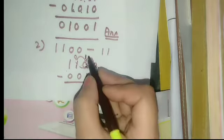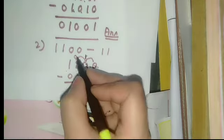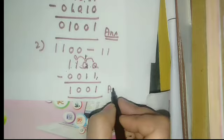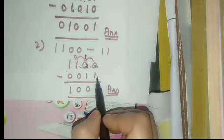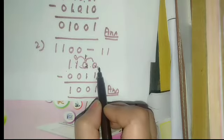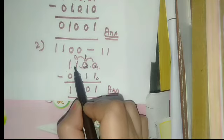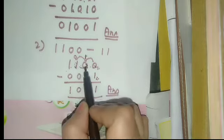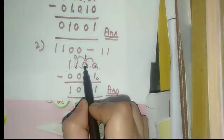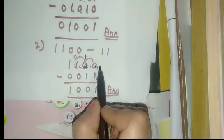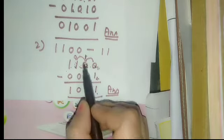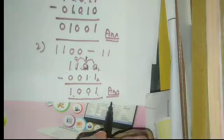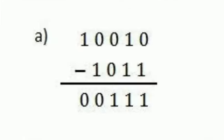Continuing: 1 minus 1 equals 0, 0 minus 0 equals 0, and 1 minus 0 equals 1. To summarize the borrow chain: 0 minus 1 requires a borrow — since the next position is 0, we go further to find 1, which becomes 0 after giving the borrow. That gives 10 (which is 2), and 2 minus 1 equals 1. Then 1 minus 1 equals 0, 0 minus 0 equals 0, and 1 minus 0 equals 1. That is the final answer.